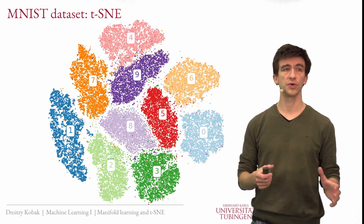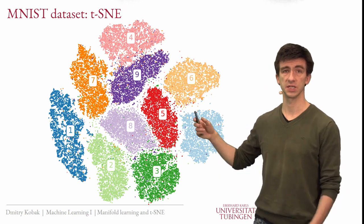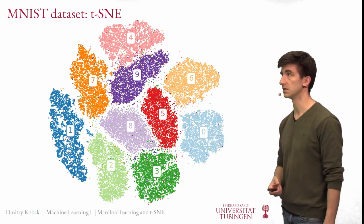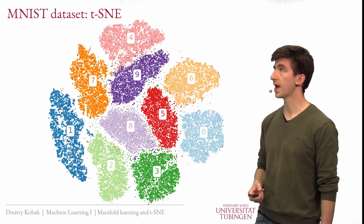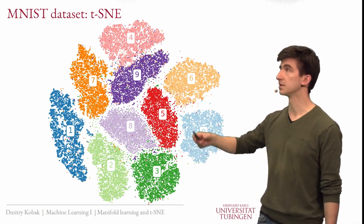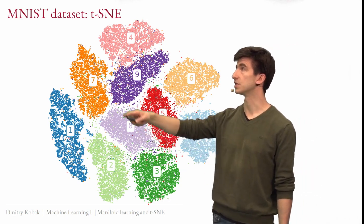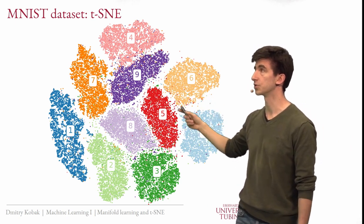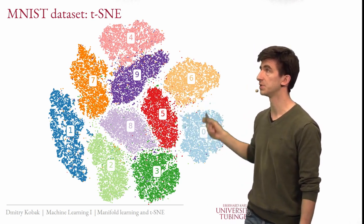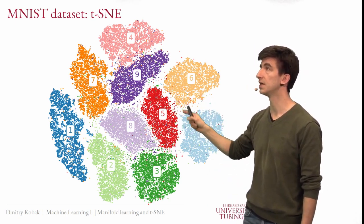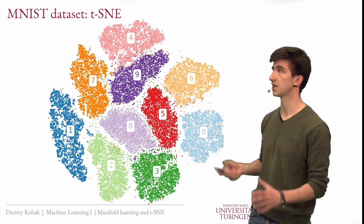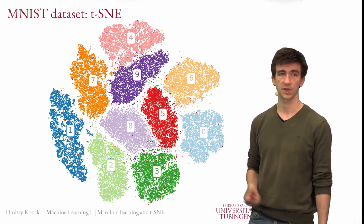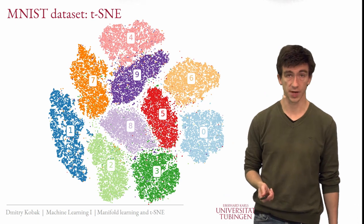Let me show immediately how T-SNE of MNIST looks like. This is the default T-SNE picture of MNIST, and it is beautiful. You see that every digit is actually its own island — there is almost no overlap between different digits, with white space in between. We can see that there are 10 clusters in the data. Just great.